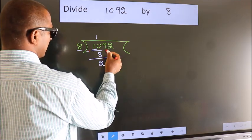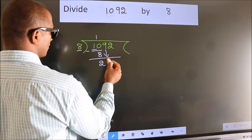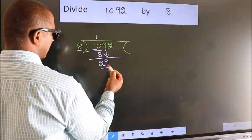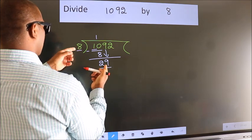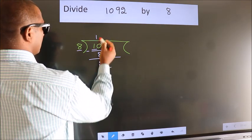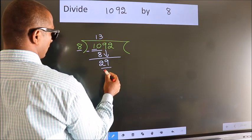After this, bring down the beside number. So, 9 down. So, 29. A number close to 29 in the 8 table is 8 threes, 24.